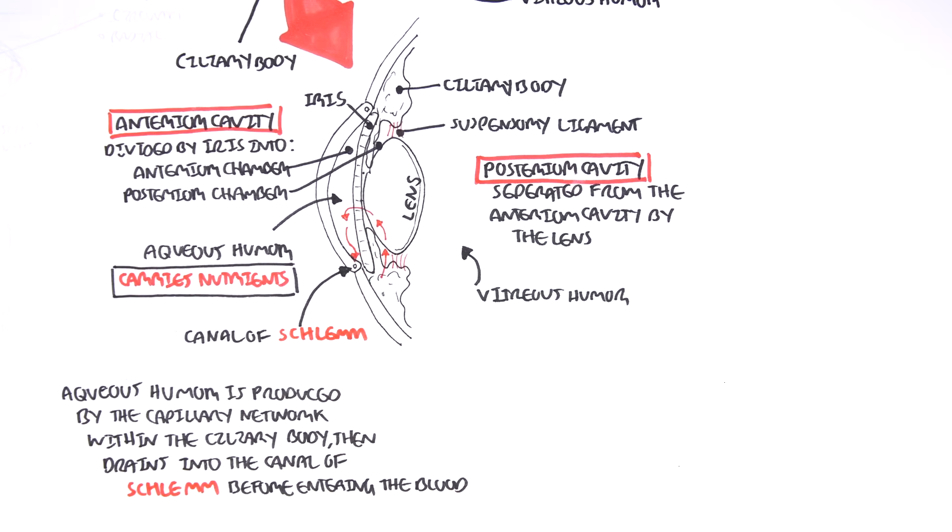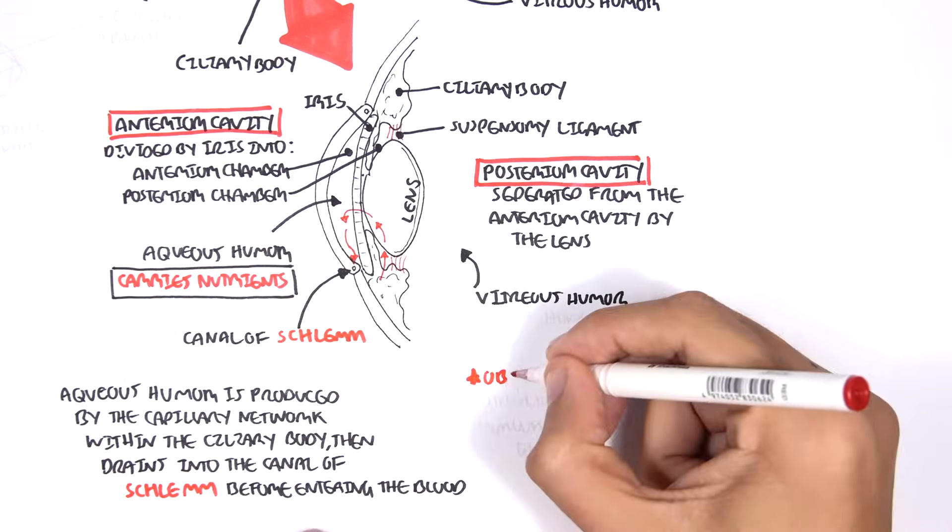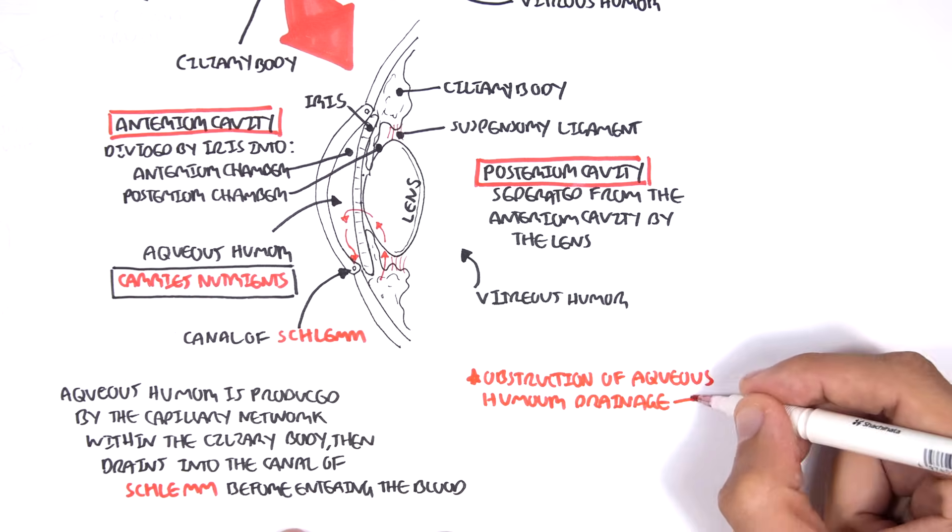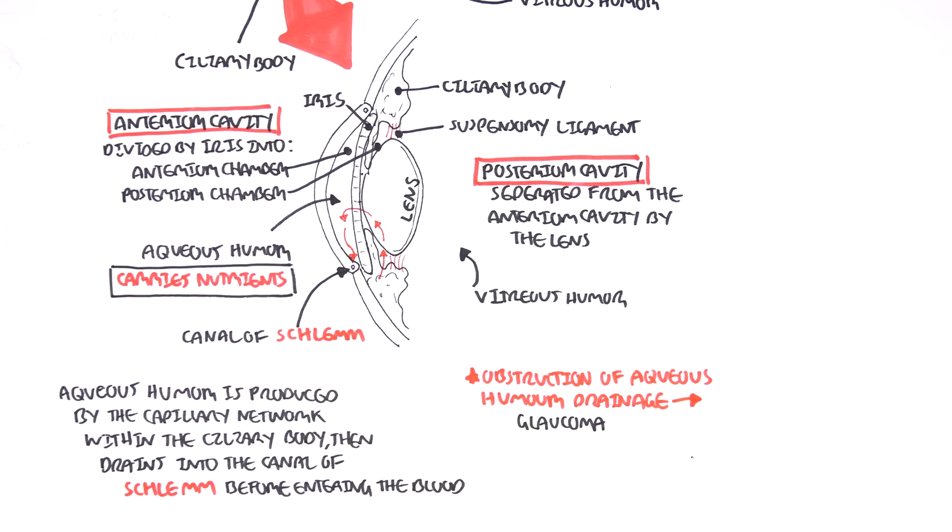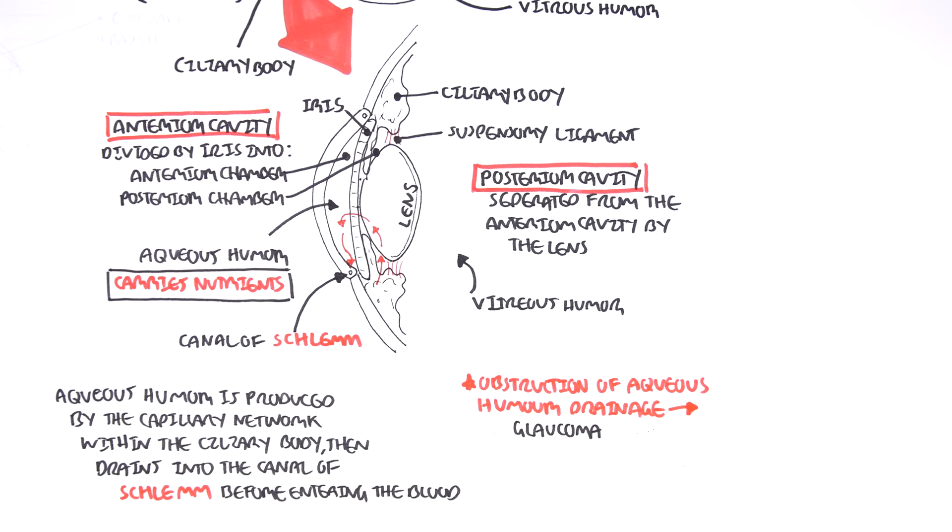This canal is important because obstruction of the aqueous humor drainage can lead to an eye condition called glaucoma. This is because pressure essentially builds up as the fluid cannot drain out, which can damage the eye's optic nerve and result in vision loss and blindness.